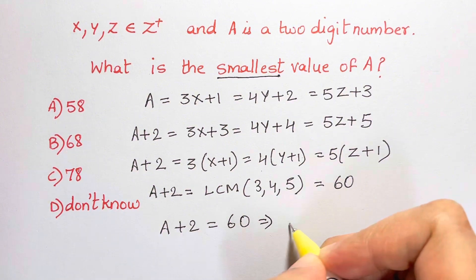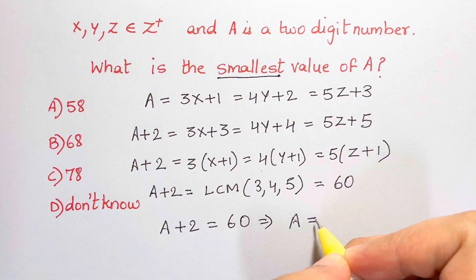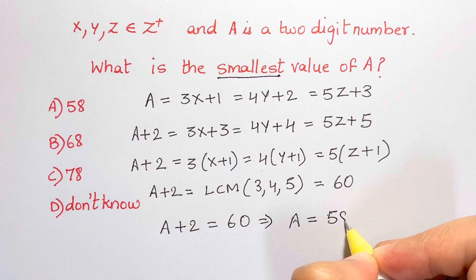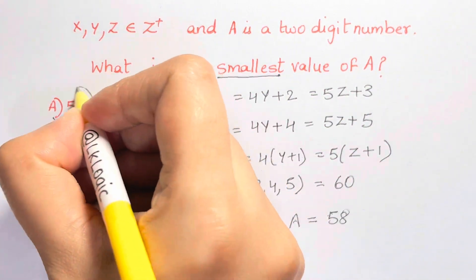So what do we have? A is equal to 60 minus 2, and that's 58. That's your answer choice A.